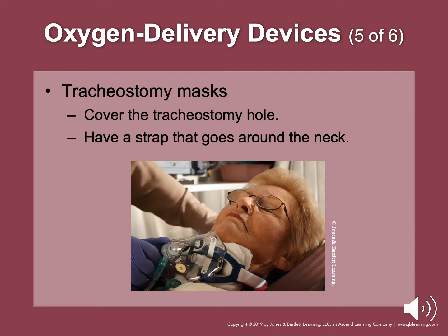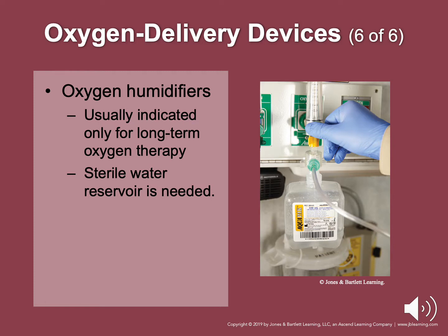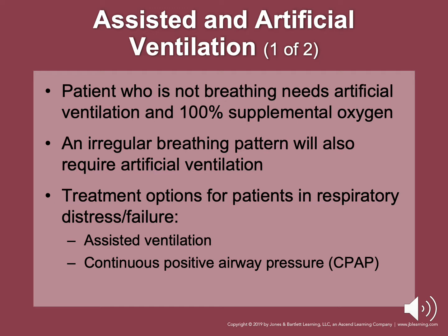Patients who are not breathing need artificial ventilation. Irregular breathing pattern will also require artificial ventilation. Signs indicating the need for assisted ventilation include excessive accessory muscle use and fatigue from labored breathing. Treatment options for patients in severe respiratory distress or respiratory failure include assisted ventilation and CPAP. To assist a patient with ventilation using a bag-valve mask, place the mask over the patient's nose and mouth, squeeze the bag each time the patient breathes, and after the initial 5 to 10 breaths, adjust the rate to deliver the appropriate tidal volume.